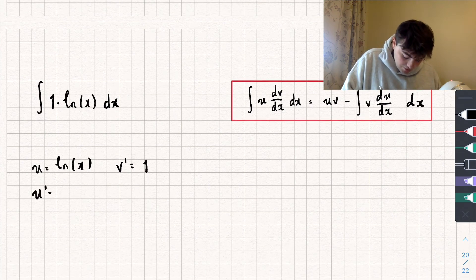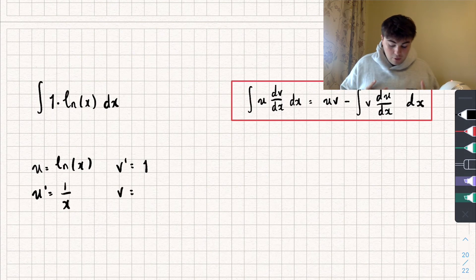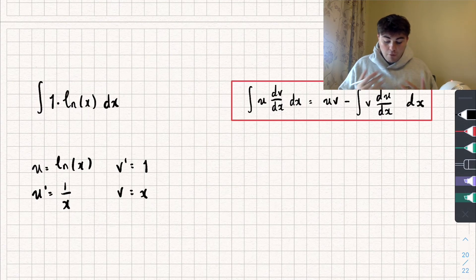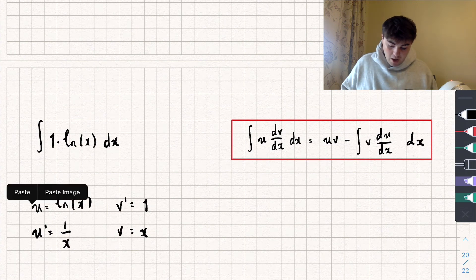So let's calculate the derivative of u. Like I've said, that's 1 over x. And the integral of v dash, which is 1, is just going to be x.